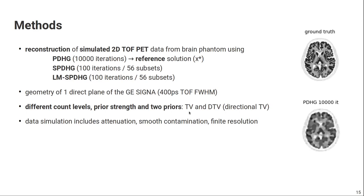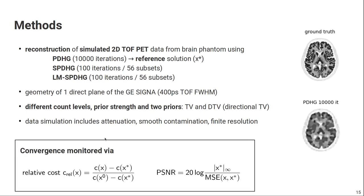And then we did SPDHG and list-mode SPDHG reconstructions using 100 iterations and 56 subsets. We did the whole thing for two different priors, so total variation and directional total variation, which is an anatomical prior, using different count levels and also using different prior strengths. The data simulation, of course, included the effects of attenuation, scatter contamination, and finite resolution. And we monitored the convergence of the two SPDHG algorithms using the relative cost, so that's the cost of the given iteration minus the final cost of the reference solution normalized by a value, and the peak signal-to-noise ratio with respect to the reference solution.